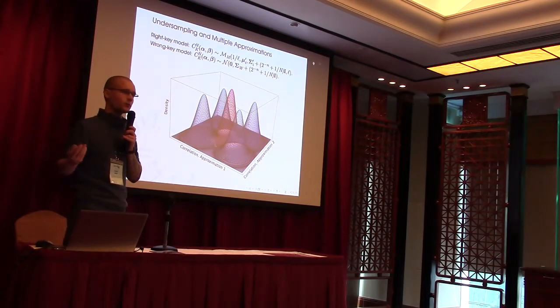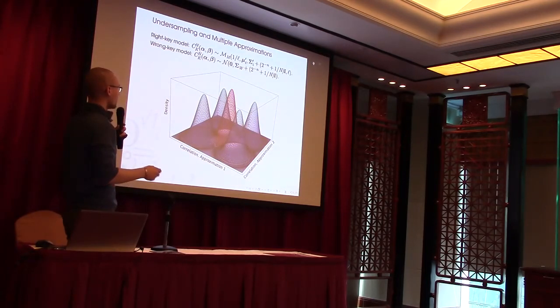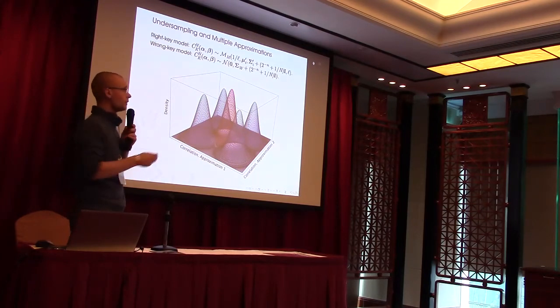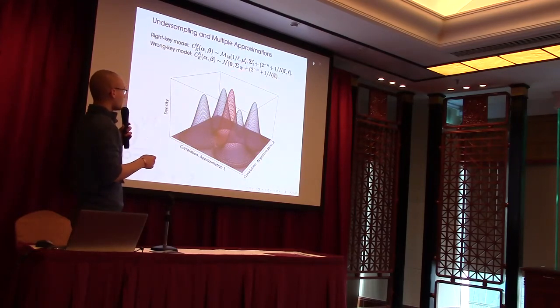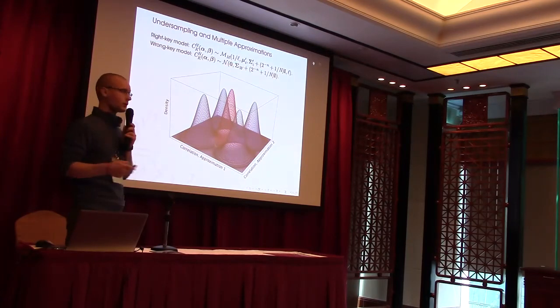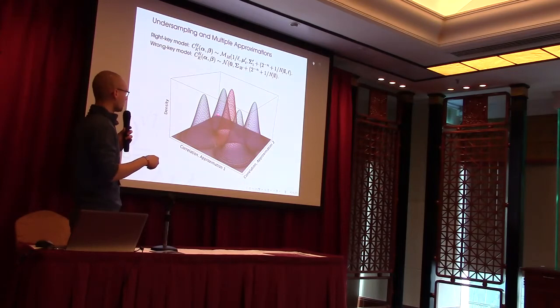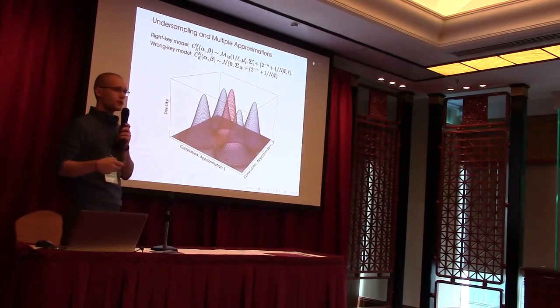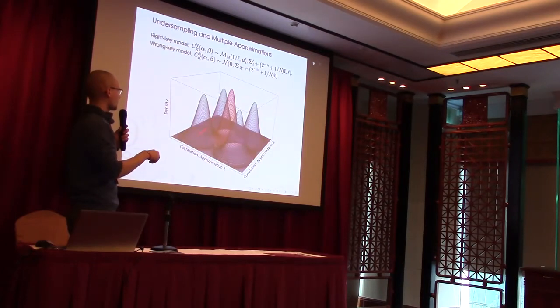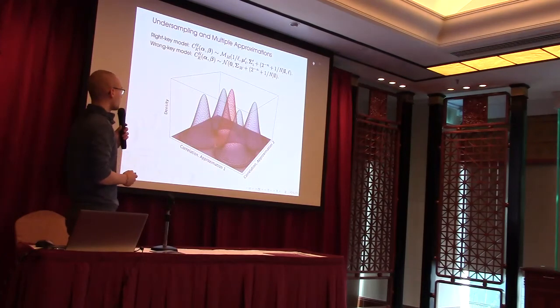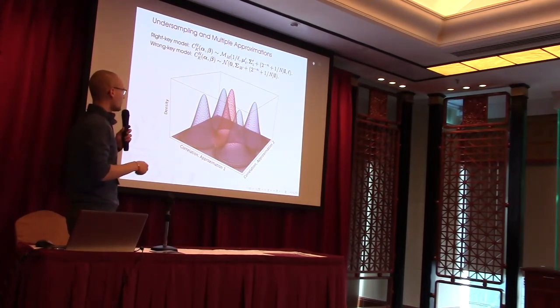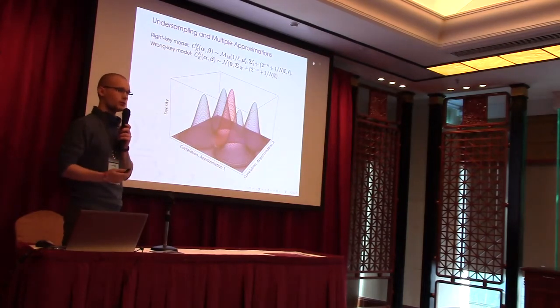We can also extend this to multiple approximations. The models are totally analogous. We just have a, for the right key, we have a mixture of multivariate normal distributions. And you have a multivariate normal distribution for the wrong key. And what it visually looks like is this. The blue here is the right key and the red is the wrong key. Here we have two approximations, so we have four of these mixture components here. In this model we just say that they occur with equal probability. Now we want to know how can we distinguish between this blue distribution and the red distribution as best as possible.